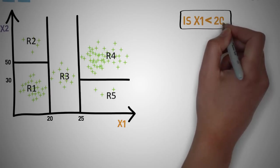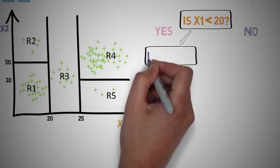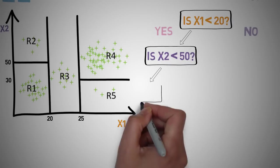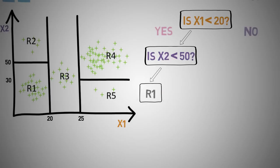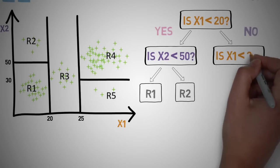We start off over here at our root node. We ask ourselves: is x1 less than 20? We go either yes or no. If yes, is x2 less than 50? If you look at our graph over there, we separate that into R1. If yes, we have R1. If no, we have R2.